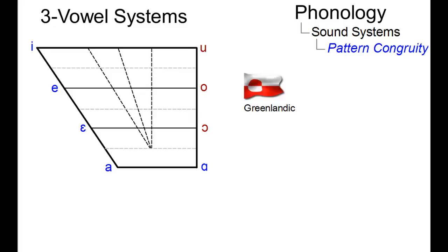Greenlandic has only three vowels, a high front vowel e with a high back vowel counterpart u. Together with the low central vowel a, they form a neat triangular pattern.